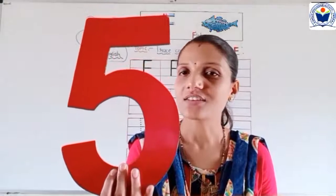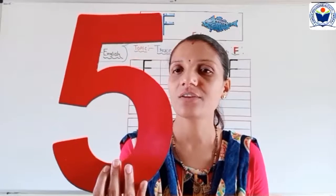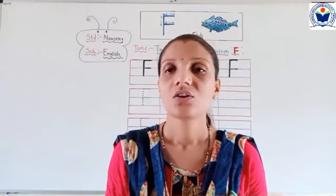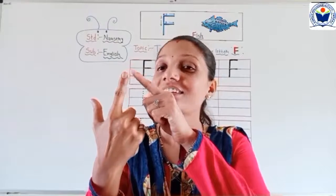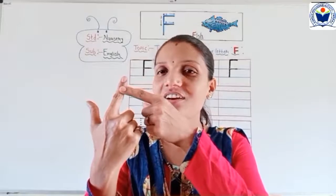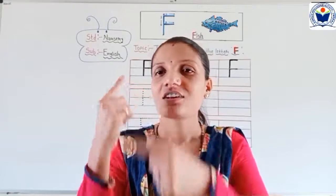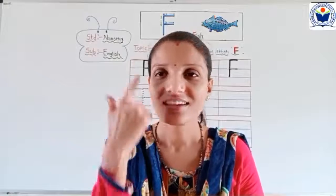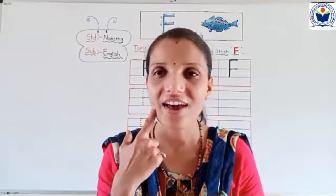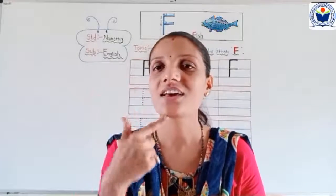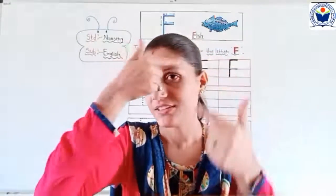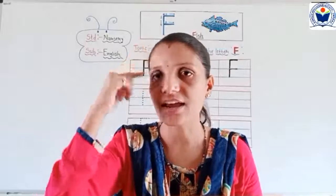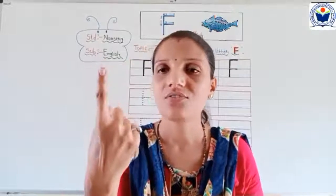This number is 5. Our fingers — how many are in one hand? 5 fingers. Look at here. This is what? Finger. Fast. Forehead. This is our parts of bodies — forehead, face, finger.